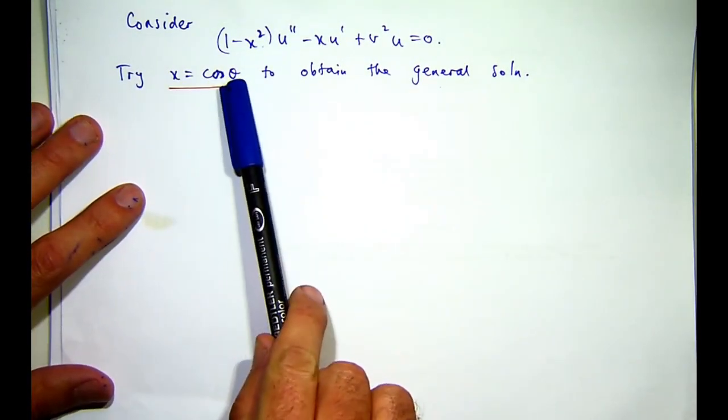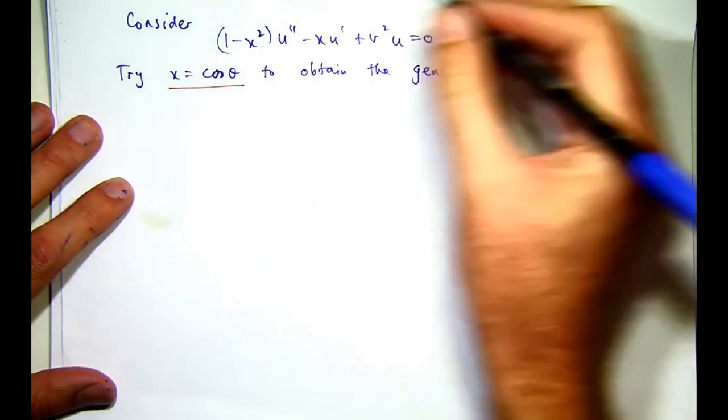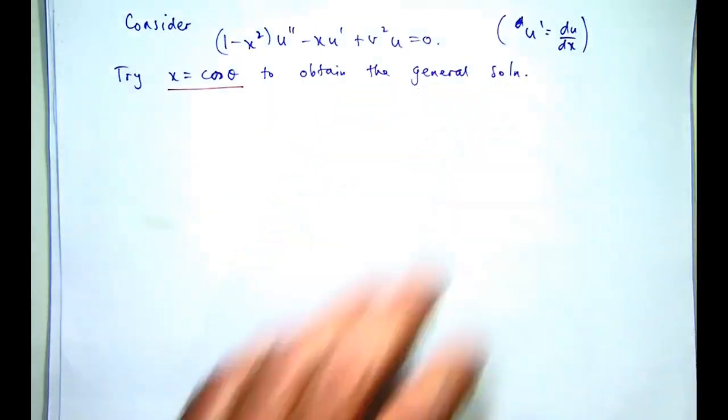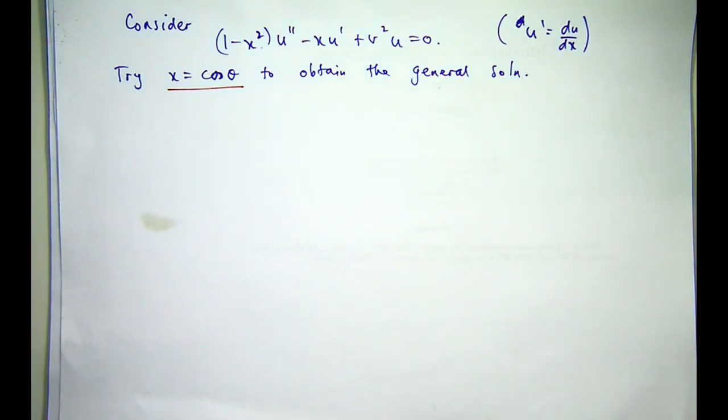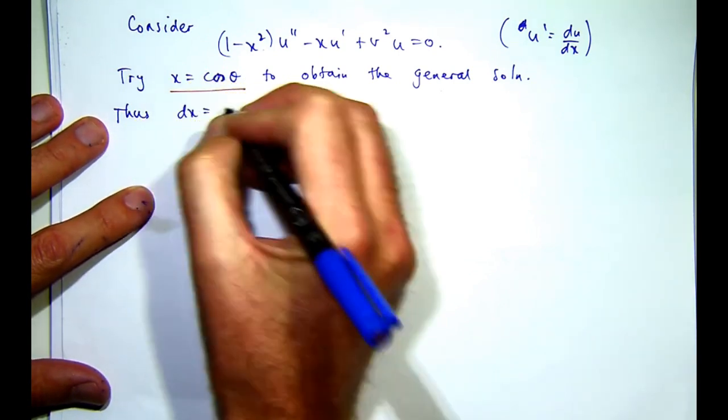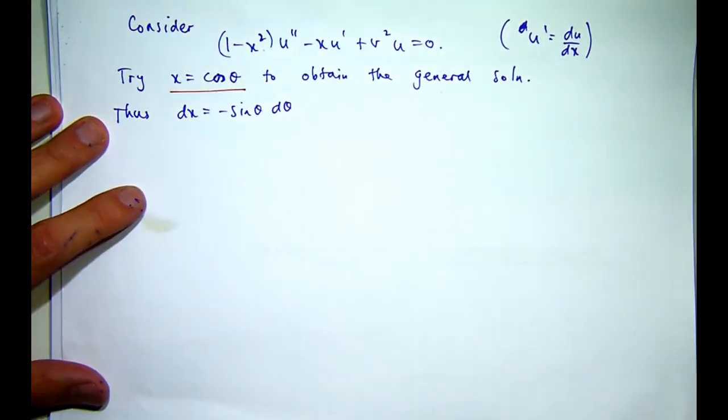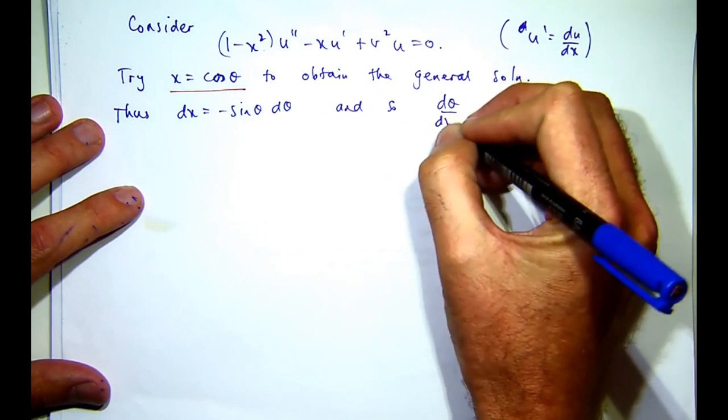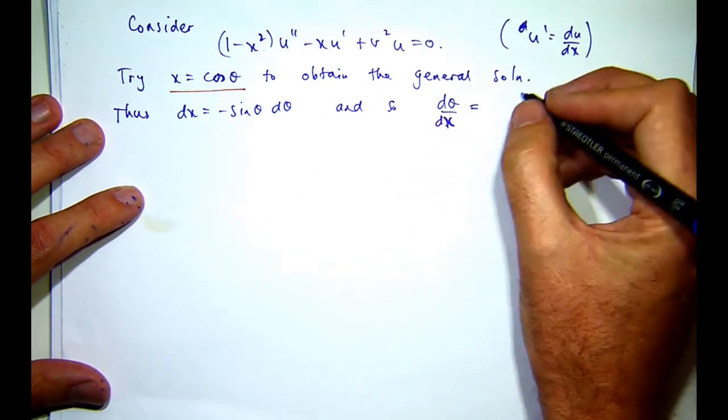So if we let x equal cosine theta, what we want to do up here is u prime, I mean d u d x, right? So what we want to do is replace all the derivatives in the original differential equation with derivatives involving d u d theta, d squared u d theta squared. Okay? So if x equals cosine theta, let's take the differentials and get the following. Okay? So if I just rearrange that, I'll get something like this.